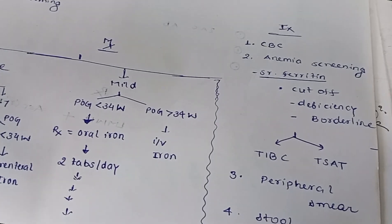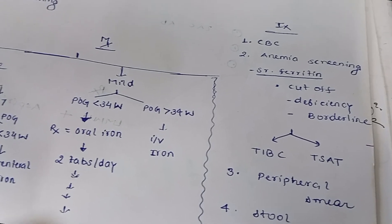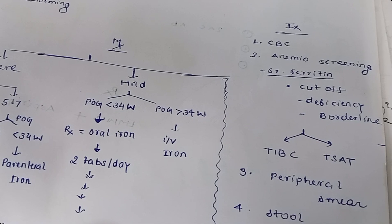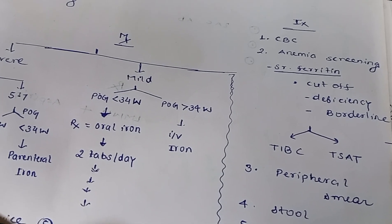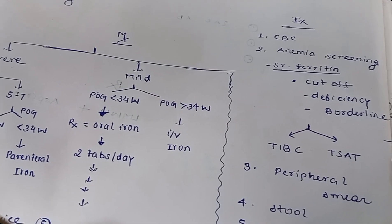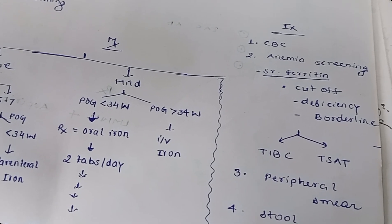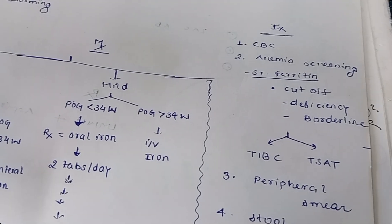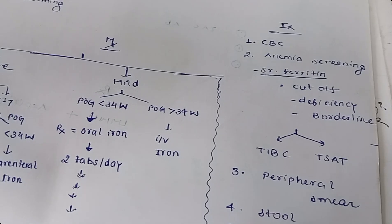For investigations, two points are very important. First, complete blood count (CBC) is done for every pregnant female in the first trimester and at 28 weeks. In CBC, there will be decreased hemoglobin and decreased hematocrit. Second, serum ferritin is the most important marker — less than 300 nanogram per milliliter is the threshold level for anemia in pregnancy.